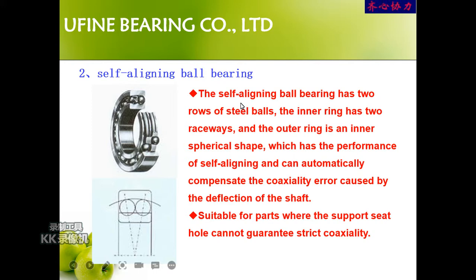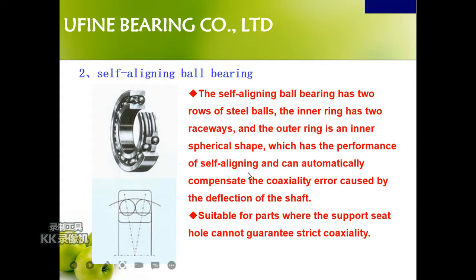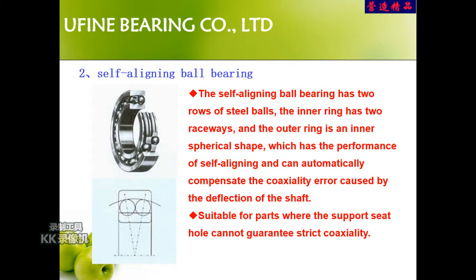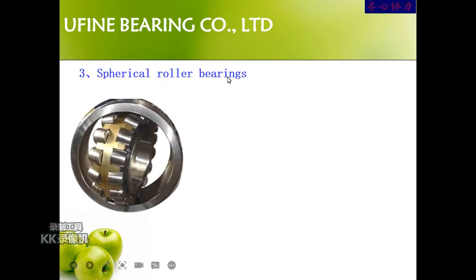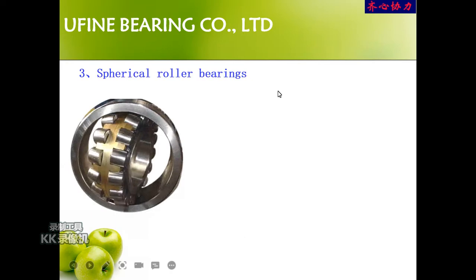The self-aligning ball bearing has two rows of steel balls. The inner ring has two rows. The outer ring has an inner spherical shape, which gives it self-aligning performance and allows it to automatically compensate for misalignment. It is suitable for parts where the support seat cannot guarantee strict coaxiality. Next is the spherical roller bearing, which can mostly replace the self-aligning ball bearing.